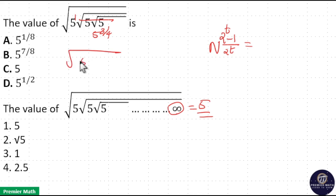So total root of 5^(7/4), which is 5^(7/8). Option B is your answer.